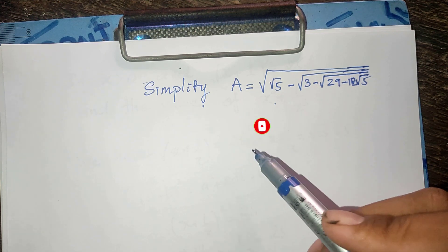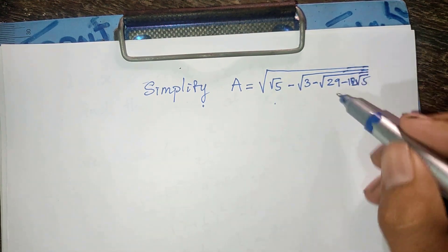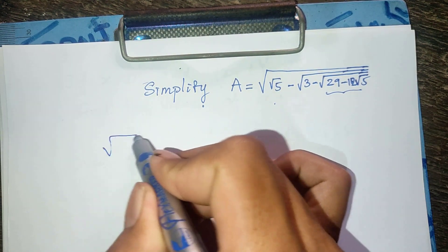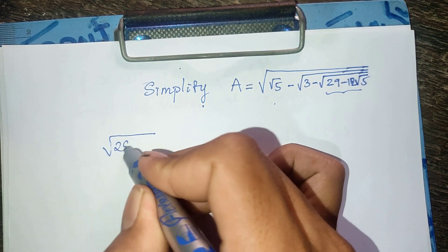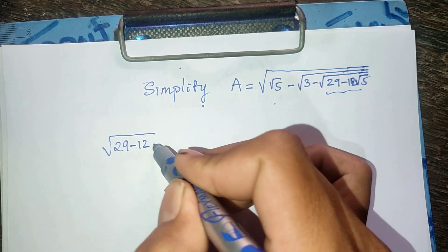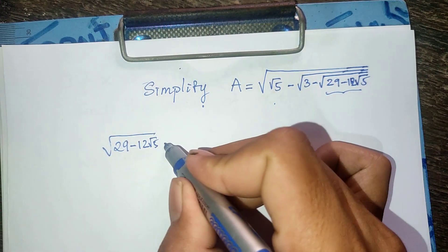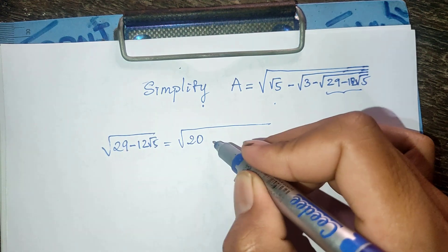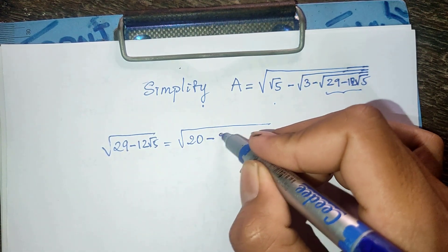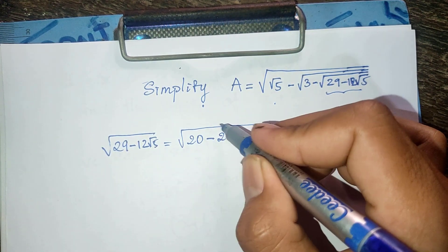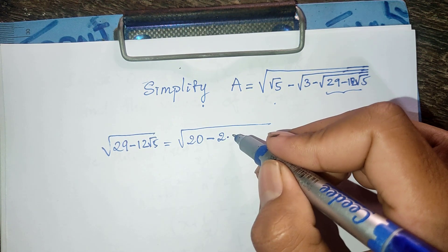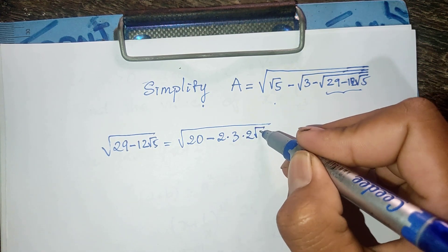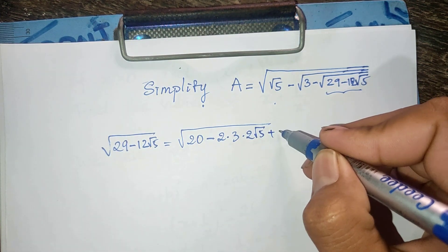Now we go to the solution together. Look at this part: I have square root of 29 minus 12 square root of 5. I can write it equals square root of 20 minus 2, multiplied by 3, multiplied by 2 square root of 5, plus 9.